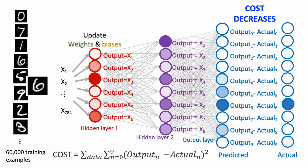We'd repeat this over and over until our output neurons are as close as they can be to getting the correct answer, which is predicting the digit that it's seeing for all the digits in our training set.